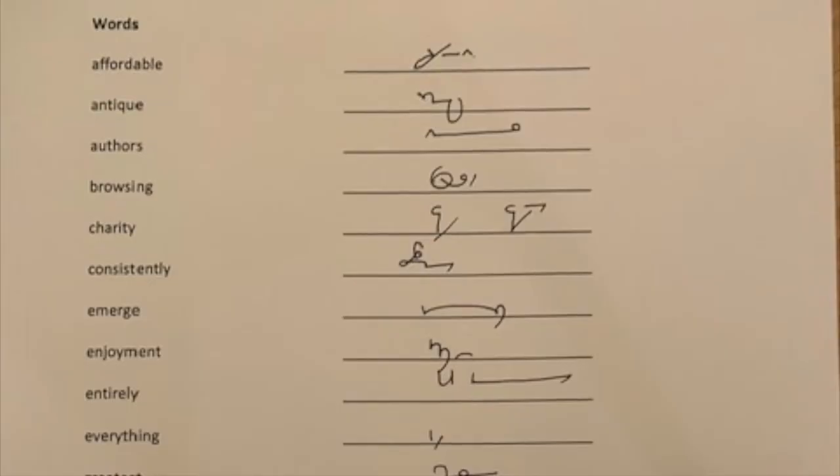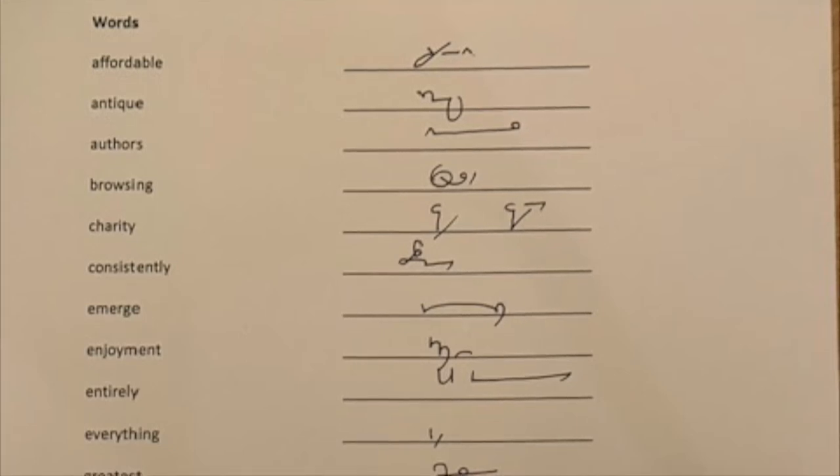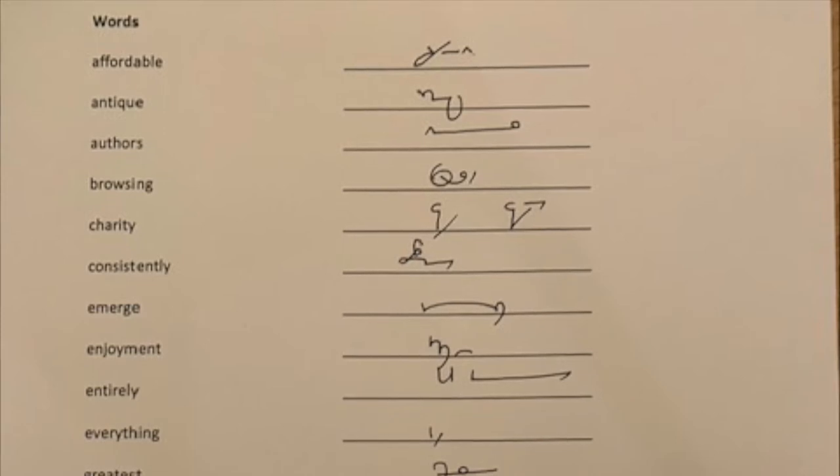First of all, the words. Looking at affordable has that disjoined A at the end of the word giving the able or the ability.